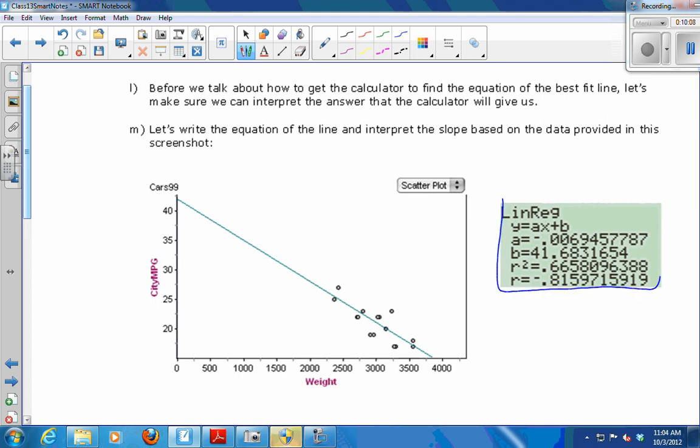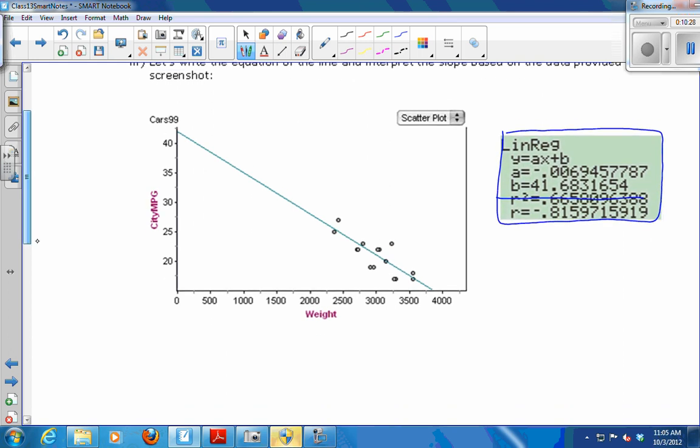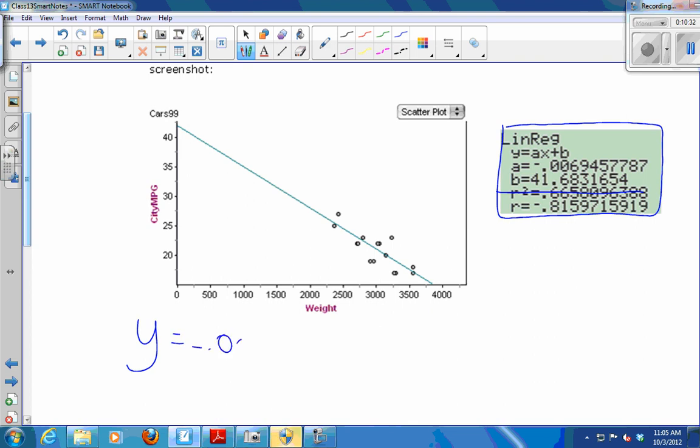So here's my regression line. I drew it. This is the kind of output that your calculator will give you. It says y equals ax plus b, so they use the letter a instead of m for slope. And then it gives you the value of a and the value of b and the r value. We do not care about r squared. Just ignore that. So the equation of this line is going to be y equals negative 0.0069x plus 41.68 approximately. I rounded the numbers because I didn't want to write down every single decimal. So that's the equation of the best fit line. The r value is negative 0.815. That tells you that the association is negative. As one goes up, the other goes down. And it's pretty close to negative 1, which means it's a pretty strong correlation.